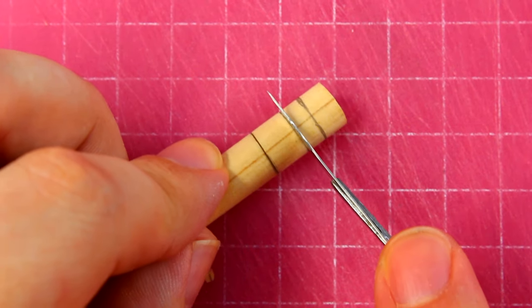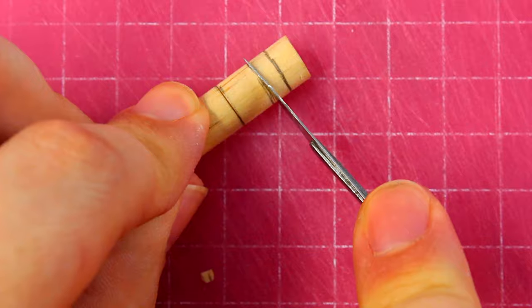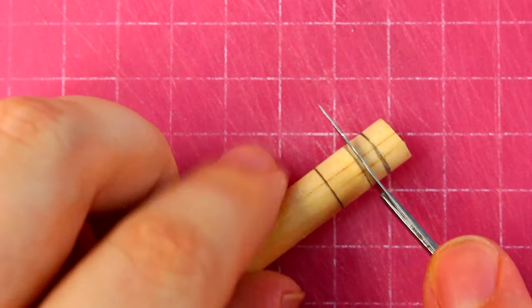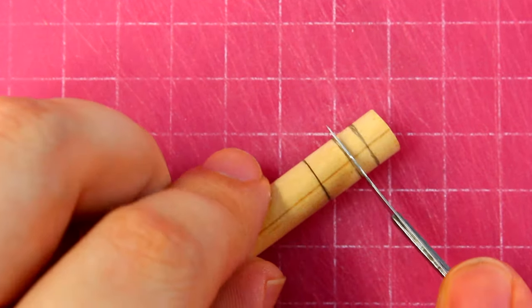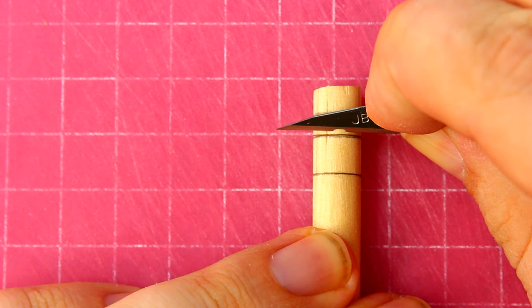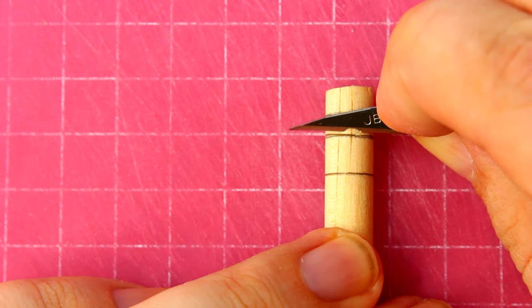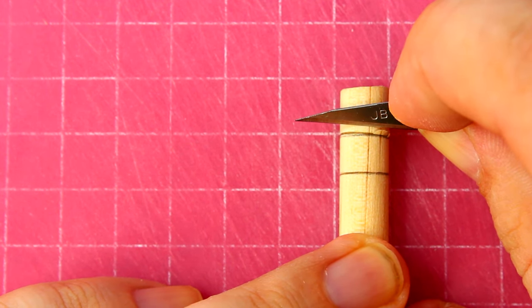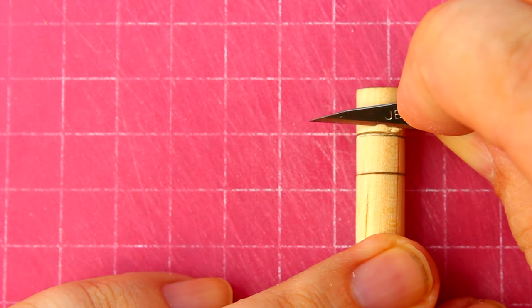I'll start with a relief cut again, a little deeper than the last one because I'm going to have to remove a lot of material. Let's just start chipping away at it. Get some of this wood out of here. And when you do this, just take small bites out of the wood.